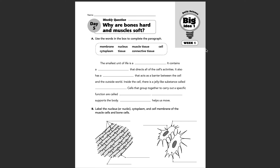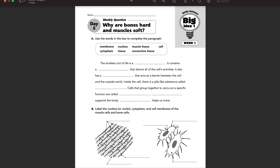Part A wants us to use the words in the word bank to complete the paragraph. The smallest unit of life is a blank. We should know these words, and if you need to refer back to Monday through Thursday to help with the vocab words, feel free to do so. The smallest unit of life is a cell.